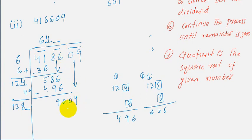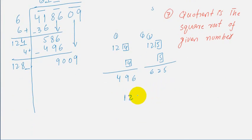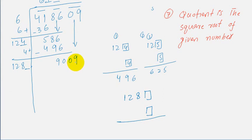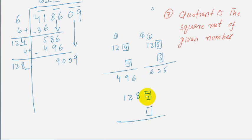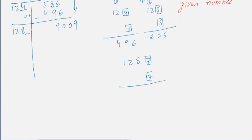We have divisor 128 and dividend 9009. We need to choose a number for both positions. Trying 7: 1287 times 7 equals 9009 — the last digit is 9, and working through the multiplication: 7 times 7 is 49, carry 4; 7 times 8 is 56 plus 4 equals 60, write 0 carry 6; 7 times 8 is 56 plus 6 equals 62, then 7 times 1 gives us 9009.